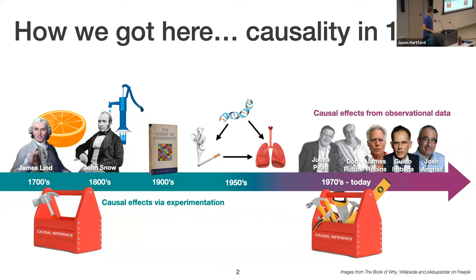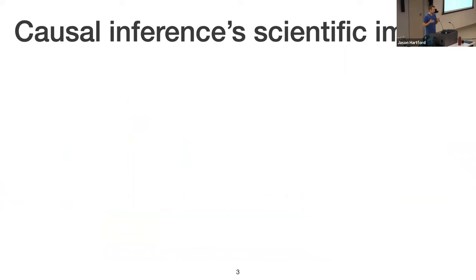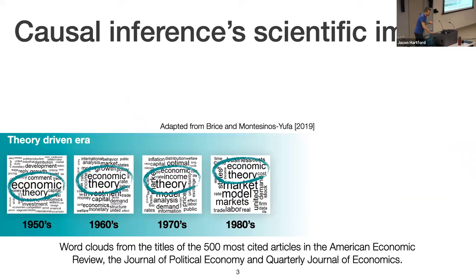This expanded the toolkit to a rich set of tools for estimating causal effects. We can get some idea of the impact by looking at economics. Economics has a funny publishing culture: everyone wants to publish in the same top five journals regardless of sub-discipline, so you can get a good idea of what the field cares about by reading those five journals — which is what Bryce Montesinha et al. did in 2019.